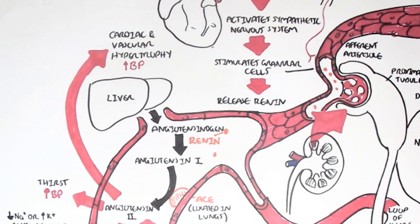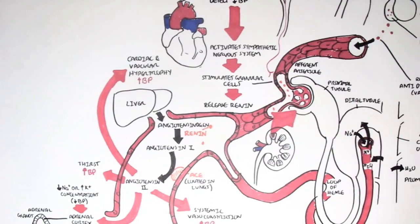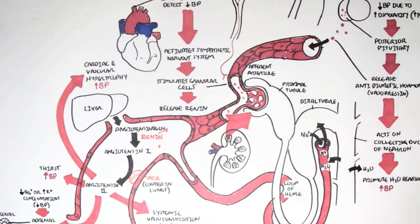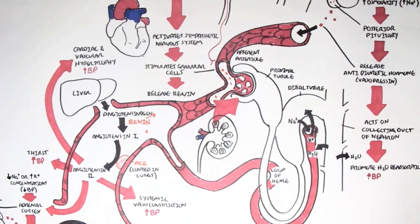So the three hormones we looked at — antidiuretic hormone, aldosterone, and angiotensin II — they all increase blood pressure, and they are all secreted or produced in response to low blood pressure. So what hormones are there that essentially decrease blood pressure?